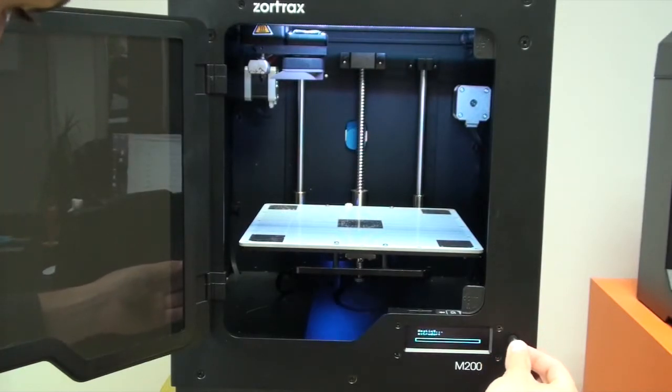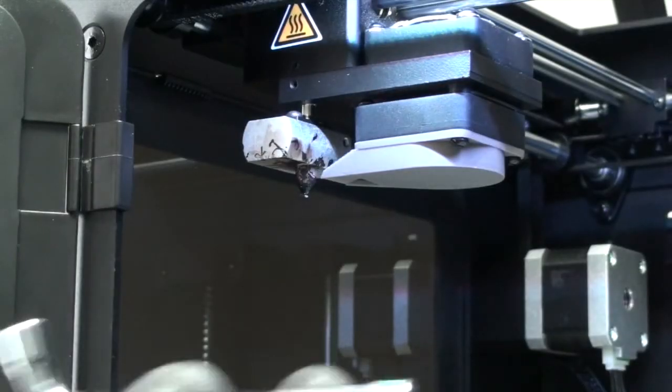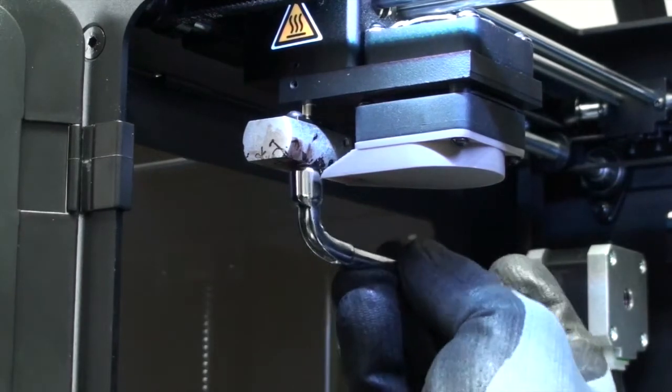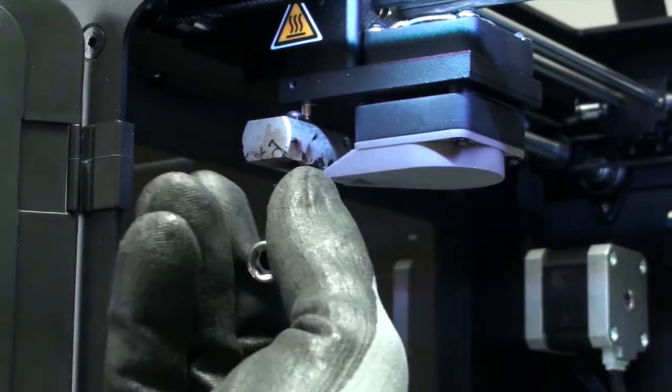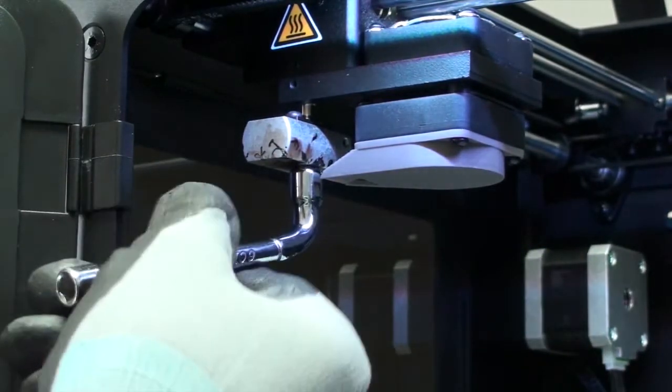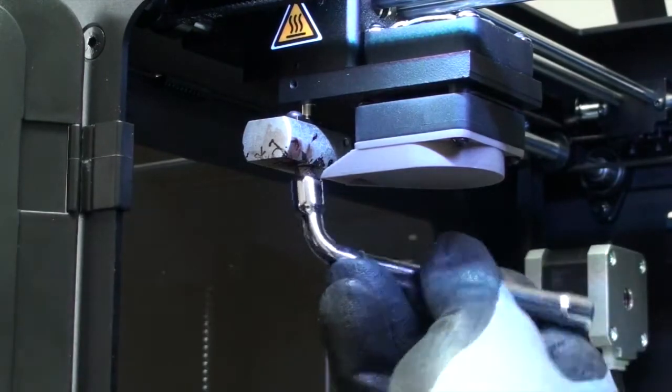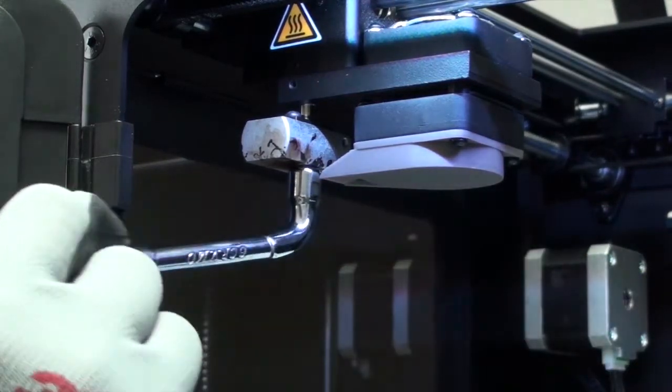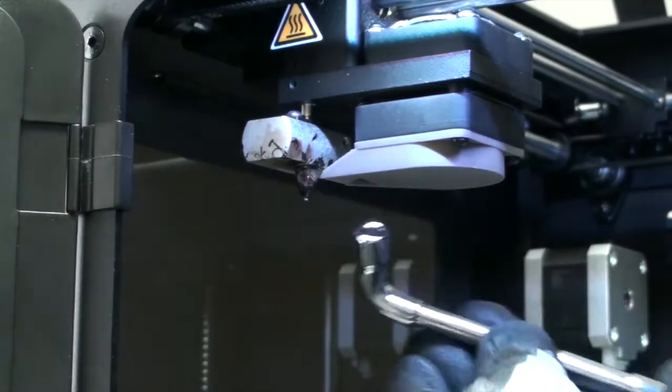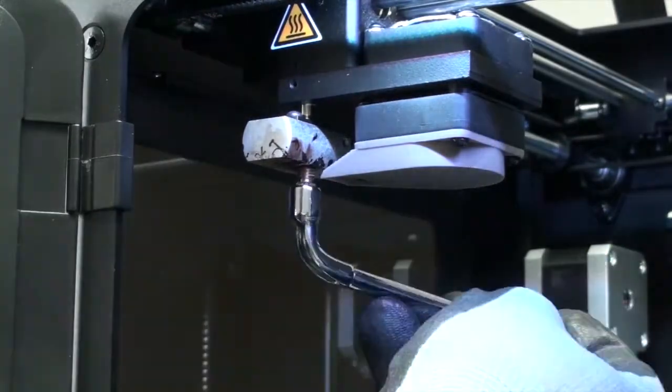The first thing to do is to heat up the extruder and get any filament that is in there nice and hot. Then you want to take this tool here that you get in with your printer and gently untighten the nozzle. You want to be quite careful here not to damage it. Let's just speed up that footage for you.